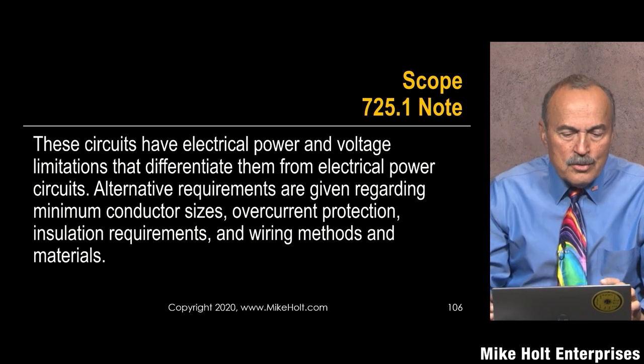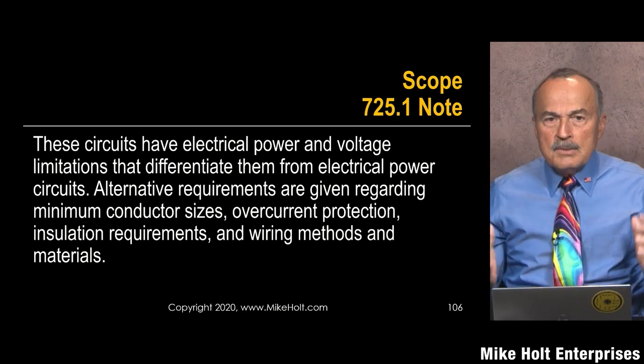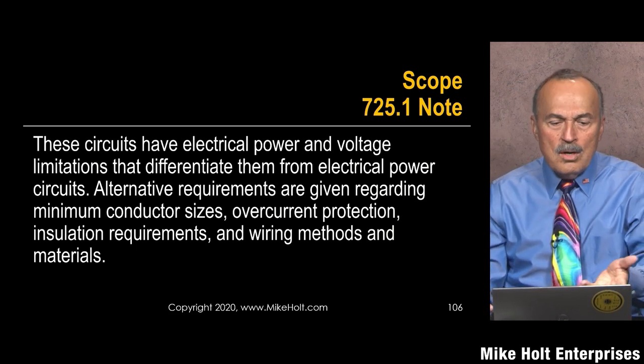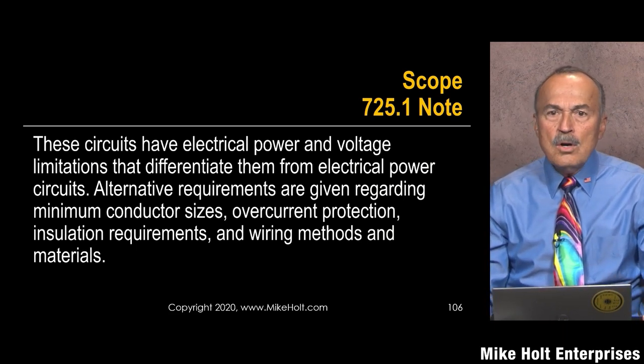Here's a problem: using the word 'alternative requirements' is like comparing these circuits against someone else. There's no alternative method here — we're simply telling you if you have a Class 1, Class 2, or Class 3 circuit, here are the rules. Don't talk about alternative methods. You can't compare Class 1, 2, 3 circuits and say it's alternative to overcurrent and conductor sizing installation. Just say: this is what we are, here are the rules.